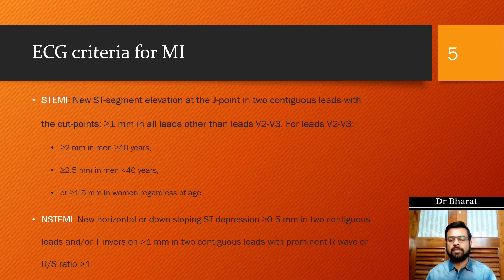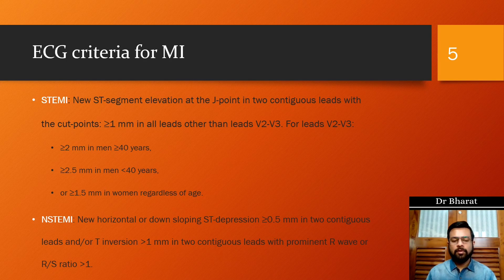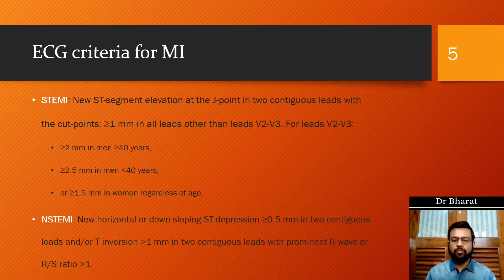In V2 and V3 we have separate criteria depending on age and sex: male patients less than 40 years need ST segment elevation of ≥2.5 mm; male patients 40 years or more need ≥2 mm; and any woman of any age requires ≥1.5 mm. Non-ST Elevation MI is diagnosed when there is new onset horizontal or down-sloping ST depression of more than 0.5 mm in two contiguous leads, and/or T wave inversion of more than 1 mm in two contiguous leads in which those leads have a prominent R wave or an R:S ratio greater than one.